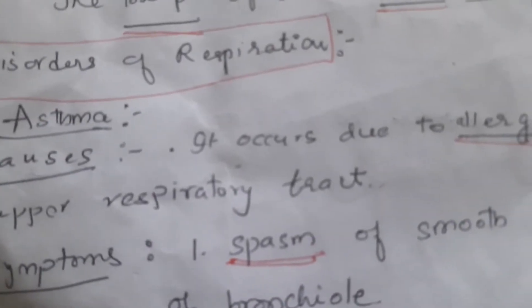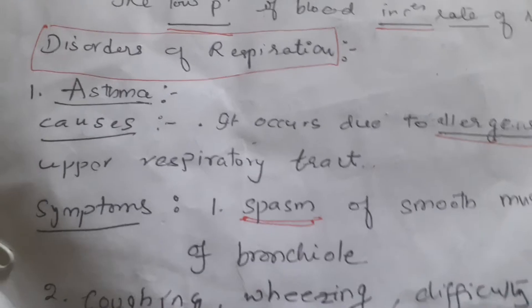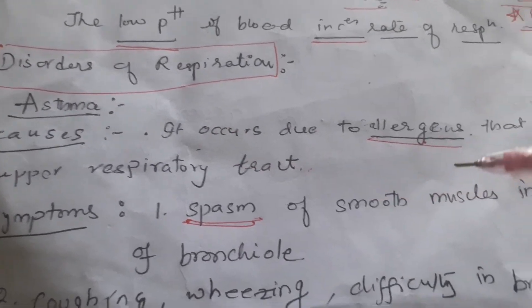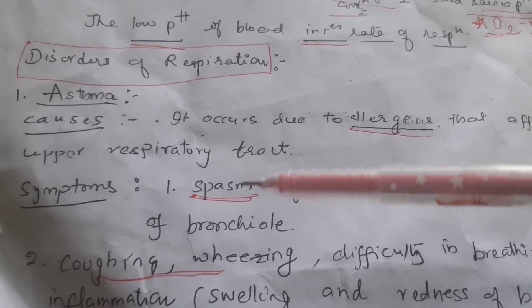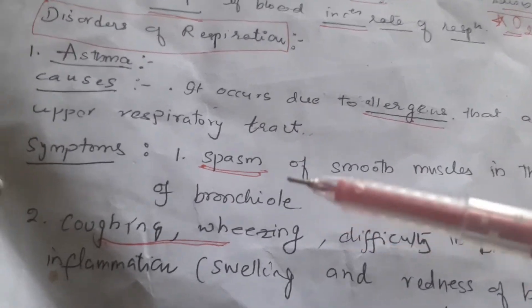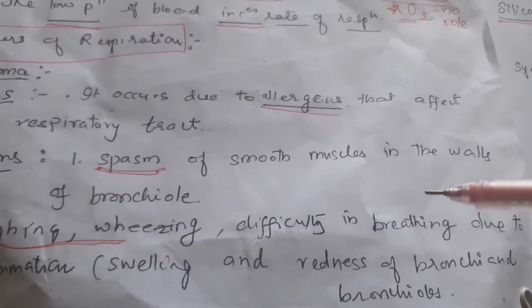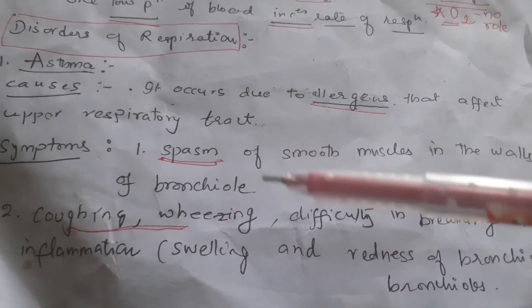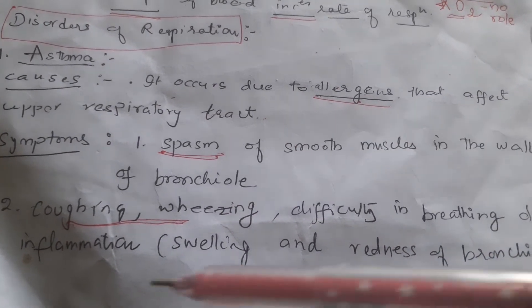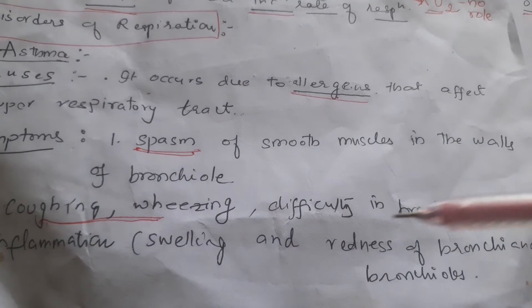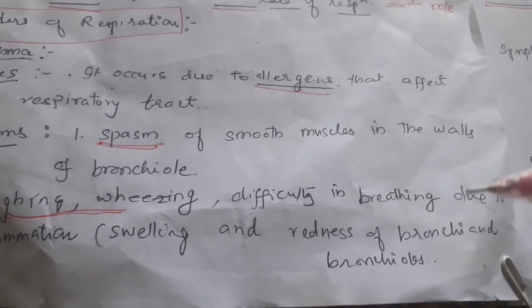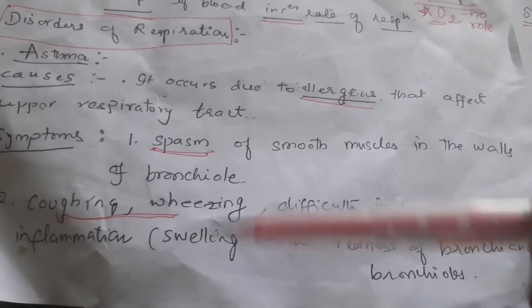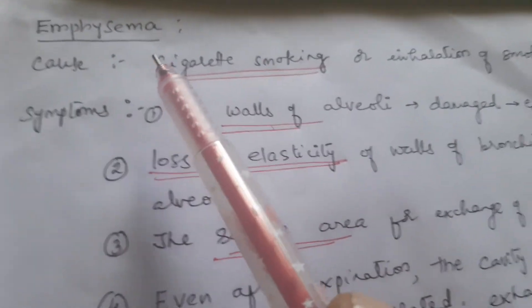Regarding disorders of respiration, asthma is a major disorder caused due to allergens affecting the upper respiratory tract. Symptoms include spasms of smooth muscles in the walls of the bronchioles, coughing, wheezing, difficulty in breathing, and inflammation — meaning swelling and redness of the bronchi and bronchioles.